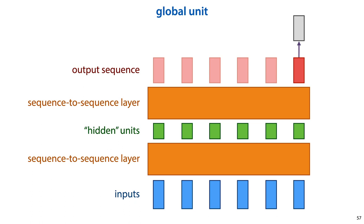Note that this pooling operation needs to work for inputs of variable length, so something like a multilayer perceptron would not work here. An alternative idea is simply to take one of the vectors in the output sequence and use that as the output vector and ignore the rest.